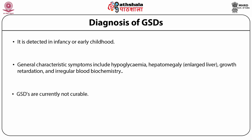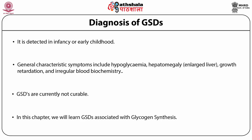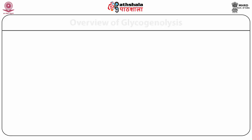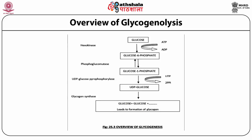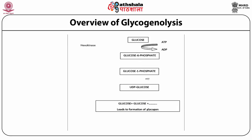Glycogen storage diseases are currently not curable and are generally treated to manage symptoms. Treatment involves organ transplant or dietary treatment. In future, it may be possible to treat such diseases using gene therapy. In this chapter, we will discuss glycogen storage diseases associated with glycogen synthesis. Let's have an overview of glycogen synthesis first, then discuss the diseases associated with it.